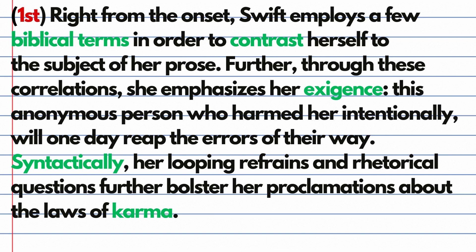So here's a first premise example: 'Right from the onset, Swift employs a few biblical terms in order to contrast herself to the subject of her prose. Further, through these correlations, she emphasizes her exigence — this anonymous person who harmed her intentionally will one day reap the errors of their way. Syntactically, her looping refrains and rhetorical questions further bolster her proclamation about the laws of karma.'